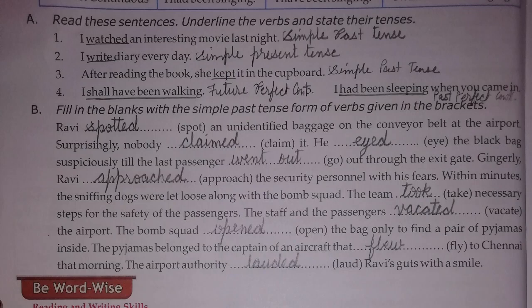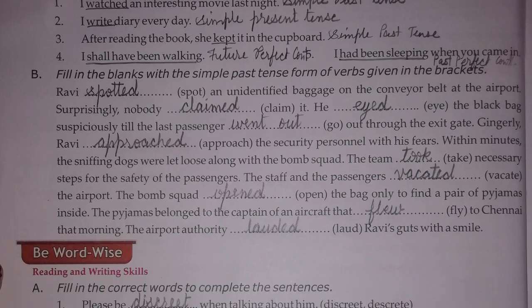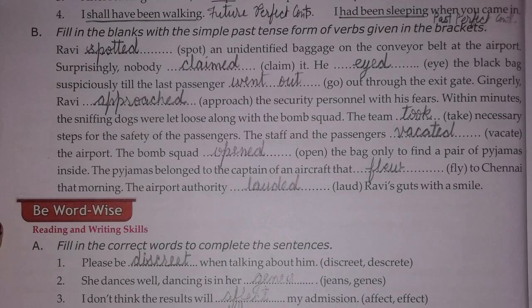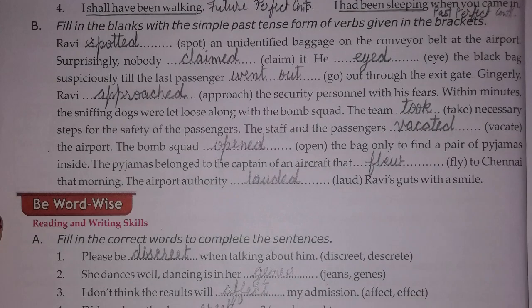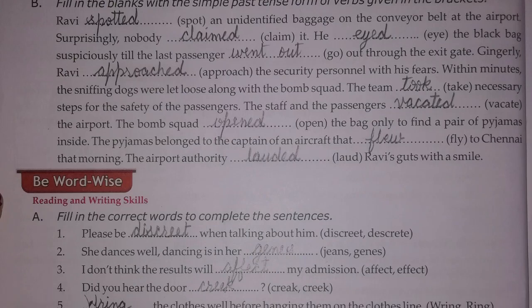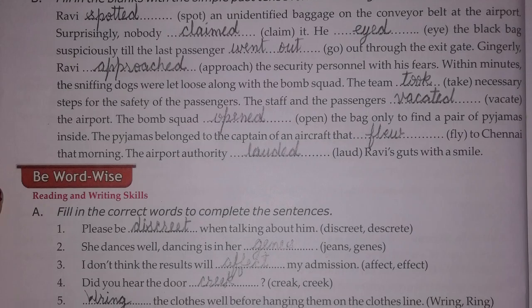Hope you understood all these exercises and the grammar part of your book. After that, let's do the word wise section from reading and writing skills: choose the correct words to complete the sentences. The first answer is 'genes,' the second has 'effect' with a double f, the third is 'create' with double e, and the fourth is 'ring.'